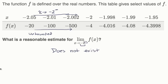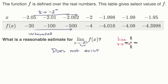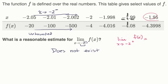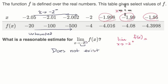If someone asked the other question — if they said, what is the limit as x approaches negative 2 from the right of f of x? Then you would say, well, here are values approaching negative 2 from the right. So this is x approaching negative 2 from the right.